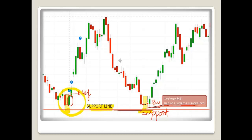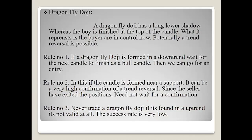The next one is the dragonfly doji. A dragonfly doji has a long lower shadow whereas the body is at the top of the candle. It represents that buyers are in control and a potential trend reversal is possible. Unlike the spinning top and long-legged doji which represent indecision, the dragonfly doji represents a trend reversal candle.